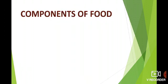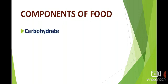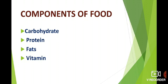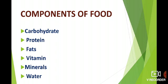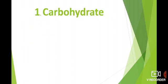We learn about the components of food. There are 6 major classes of nutrients: 1st — carbohydrate, 2nd — protein, 3rd — fat, 4th — vitamin, 5th — minerals, and 6th — water. These are the 6 major classes of nutrients. Let us learn about these components in detail.